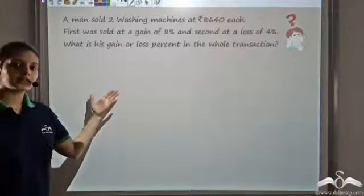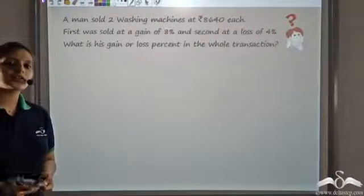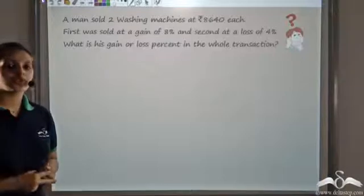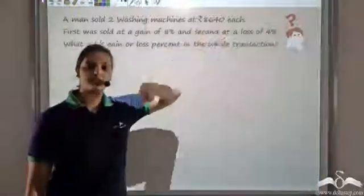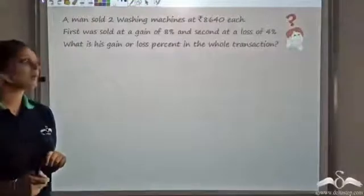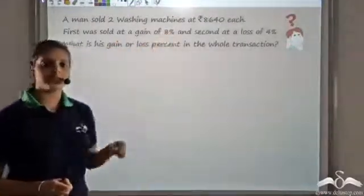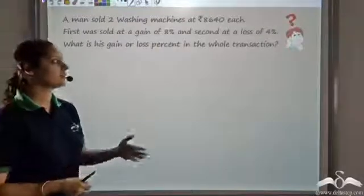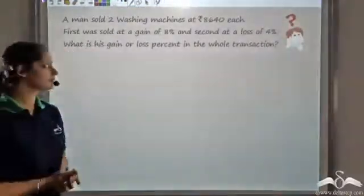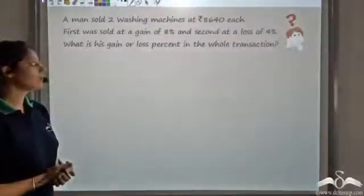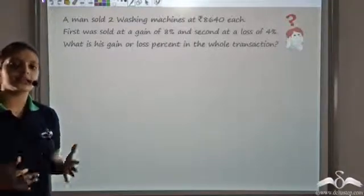Let us see if you can answer this question. A man sold 2 washing machines, each at the price of ₹8640. On the first one he got a gain of 8 percent, whereas on the second there was a loss of 4 percent. Can you find his loss or gain percent on the entire transaction?